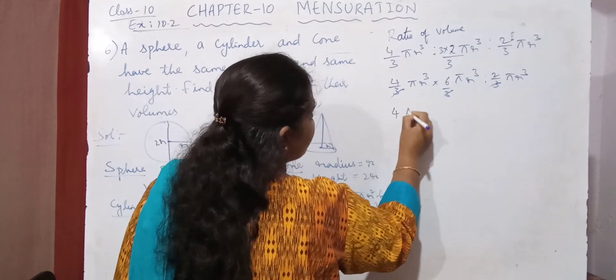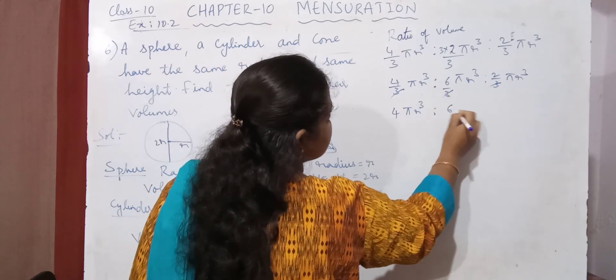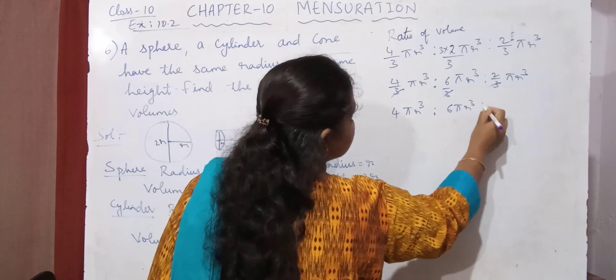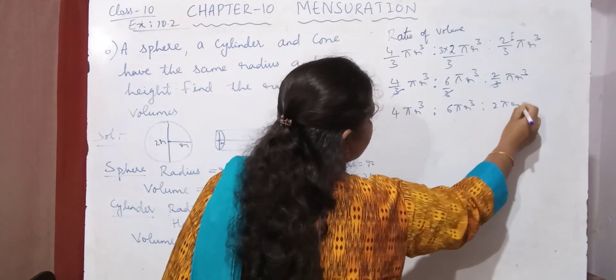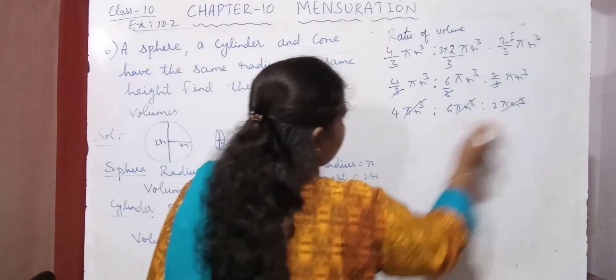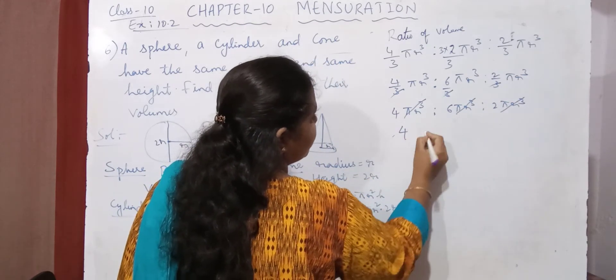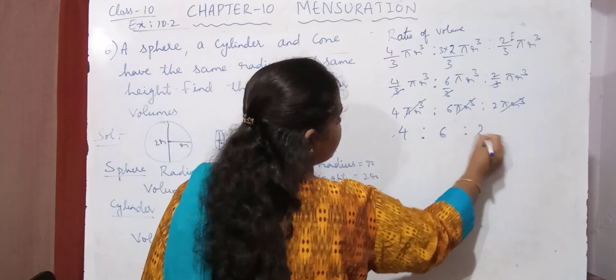So what is left out? 4 pi r cube, 6 pi r cube, 2 pi r cube. If you observe in all the 3 cases, you have pi r cube. So what is left out? 4 is 2, 6 is 2, 2.